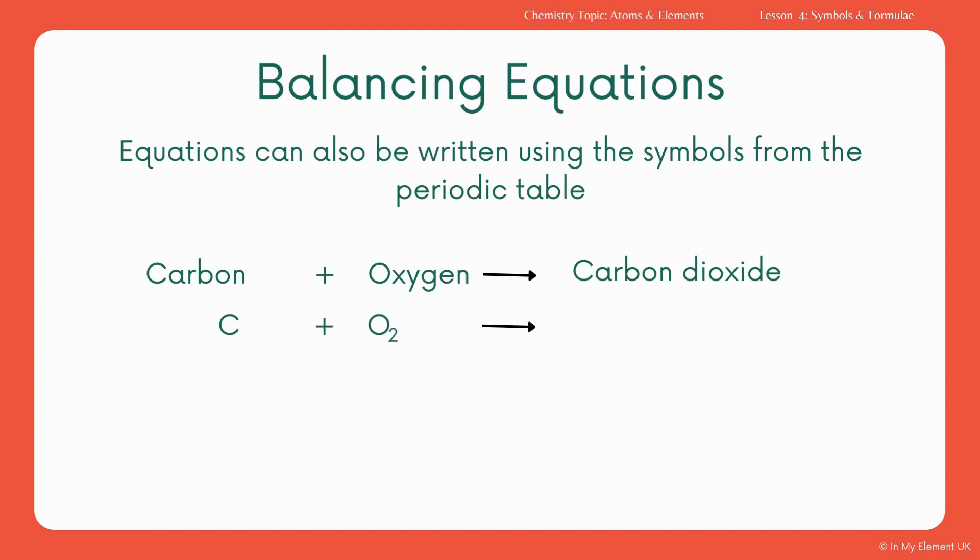Oxygen as an element appears in pairs, so we always write it as O2. Now, carbon dioxide, the formula for this, is CO2. You have to check that there's the same number of each element, each side of the arrow. So we can see that we've got one carbon and two oxygens as the reactants, and then the same, even though it's in the form of carbon dioxide.